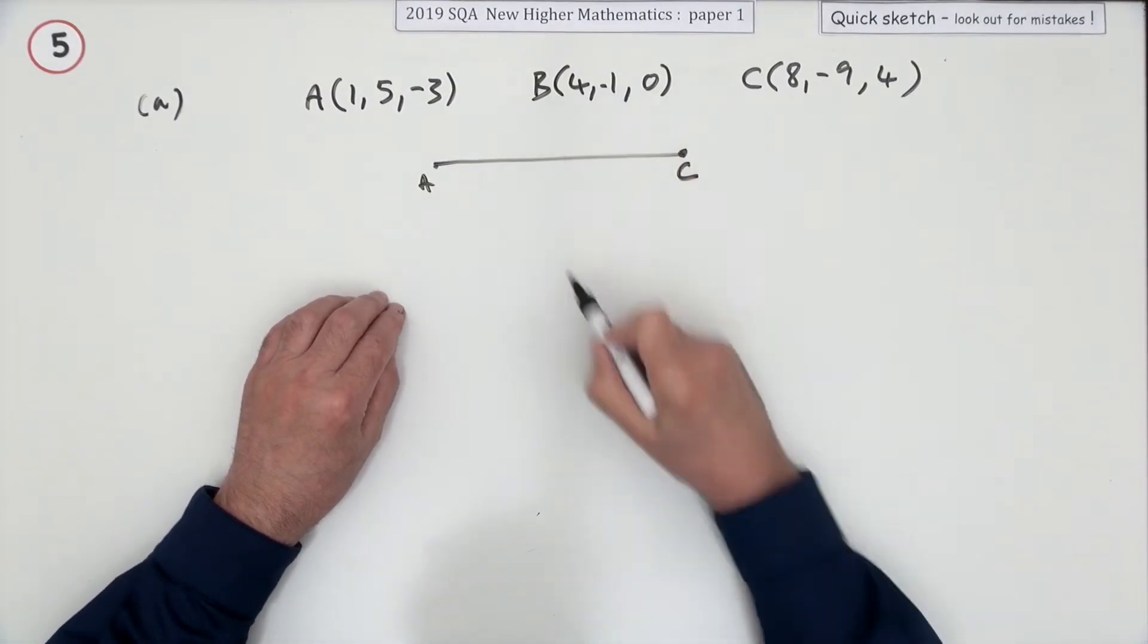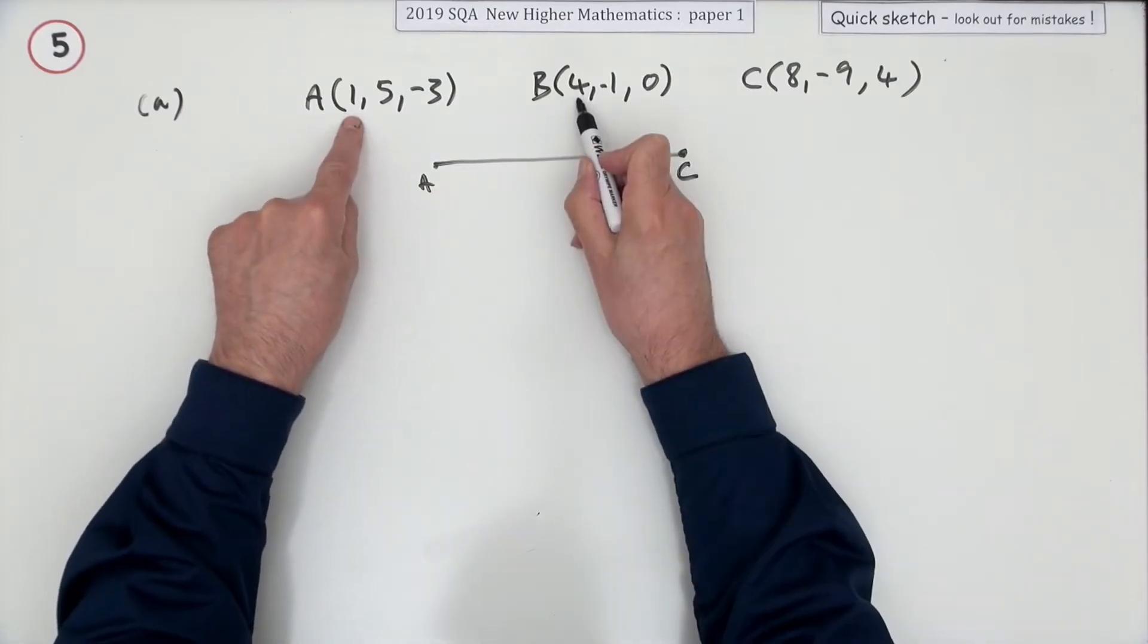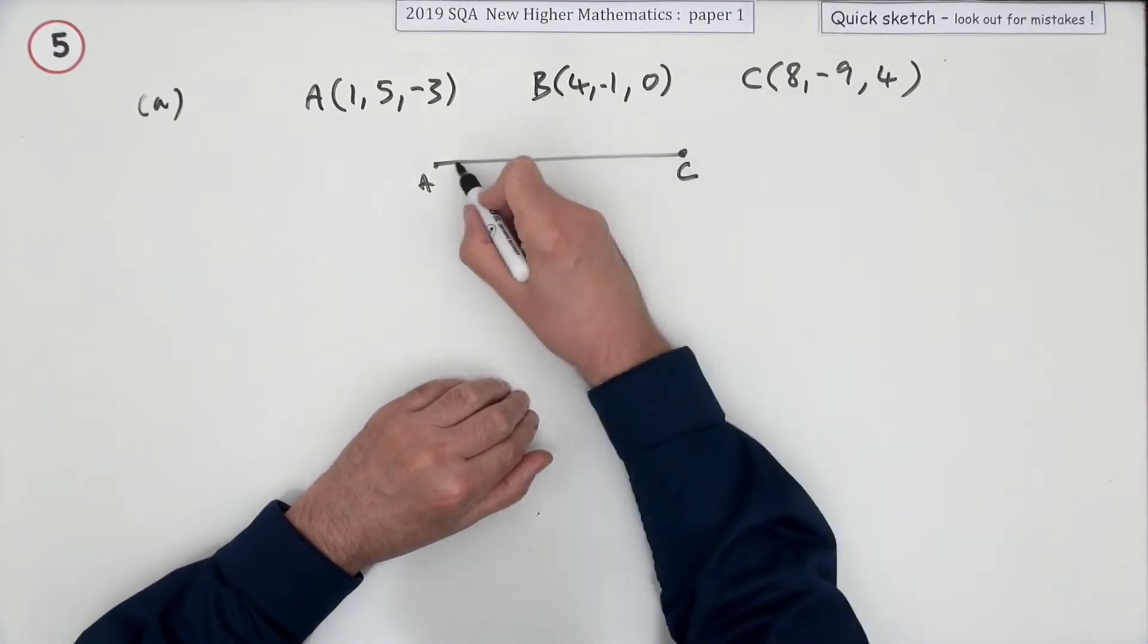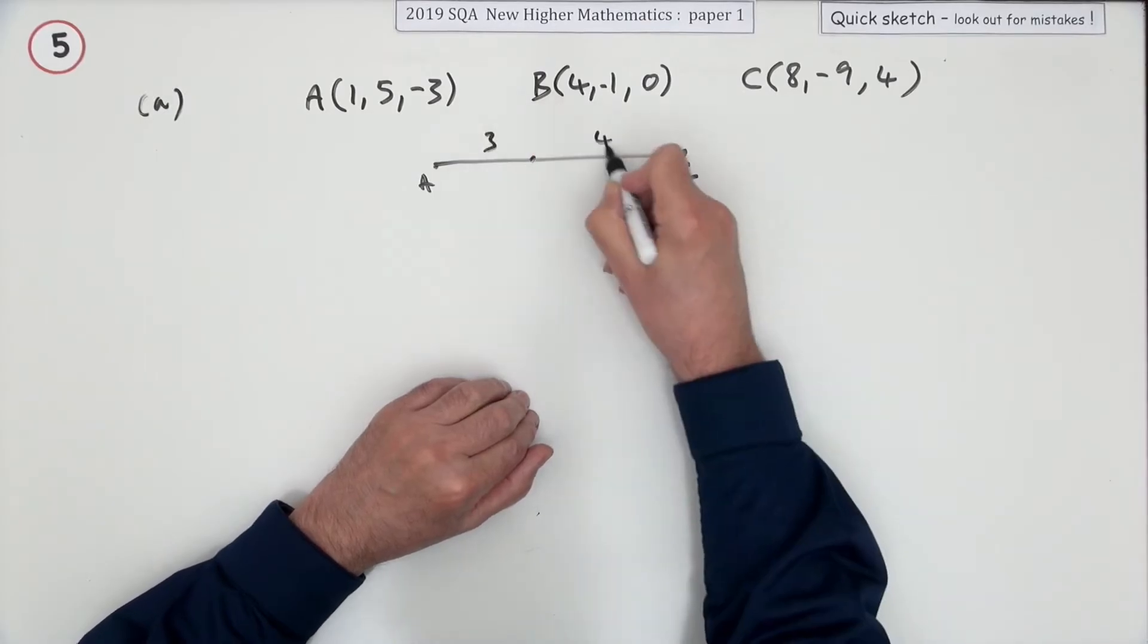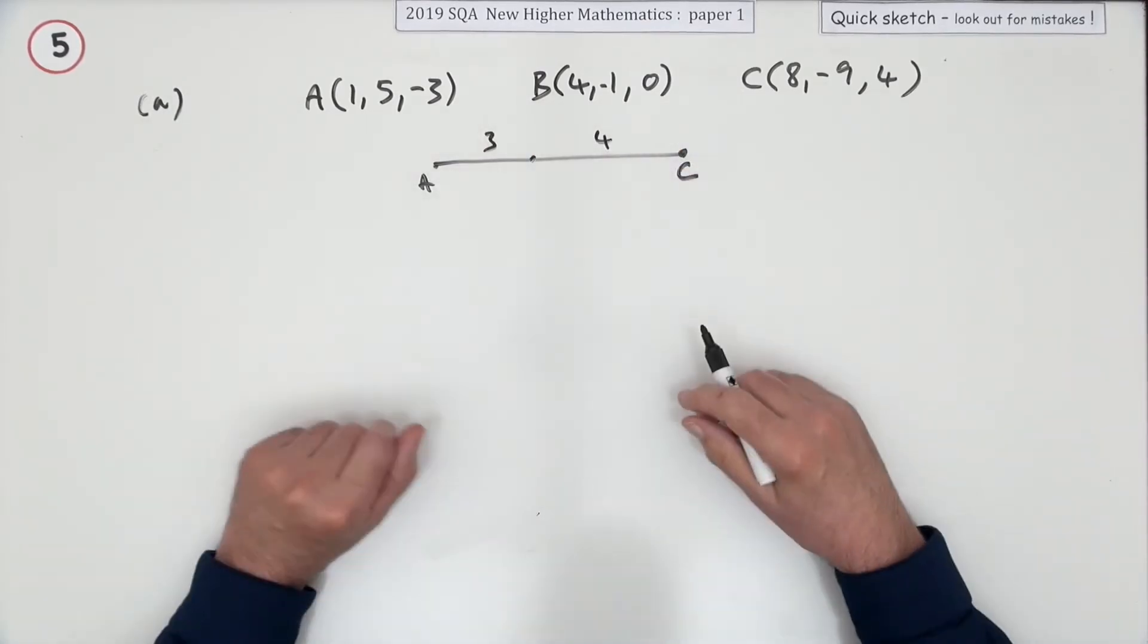You can see where B is. One to four is three steps, four to eight is four steps, so B has three steps there, four steps there. That's actually the answer to part B straight away, but let's forget that for the moment.